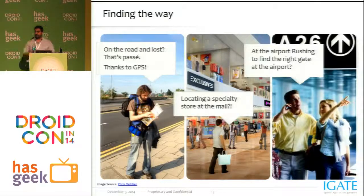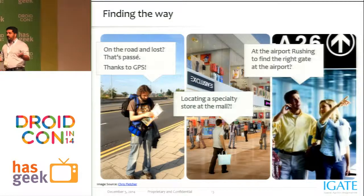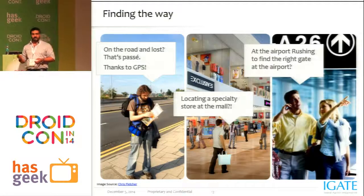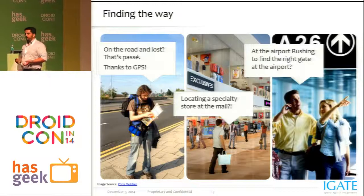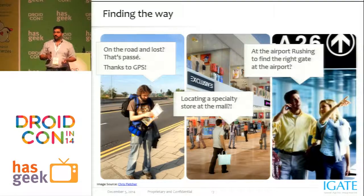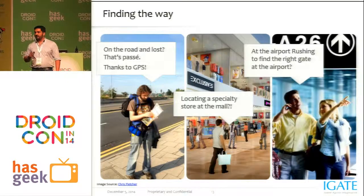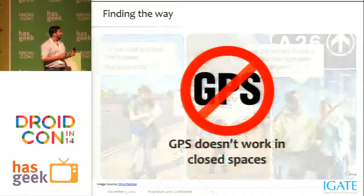Apart from proximity, we can do exact positioning of a user indoors. Say you are outside and use Google Maps to navigate, but after entering a building, Google Maps or GPS won't work inside. So what you can do is deploy beacons inside the building — for example, to find where exactly the auditorium or conference room is — and create an app for your customers.